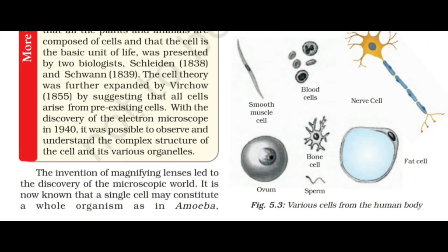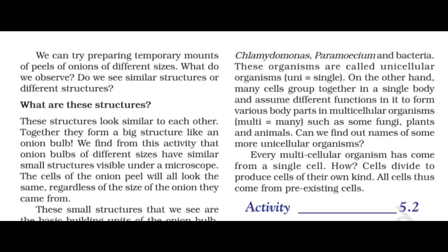The invention of magnifying lenses led to the discovery of the microscopic world. It is now known that a single cell may constitute a whole organism, as in amoeba, chlamydomonas, paramecium, and bacteria. These organisms are called unicellular organisms.